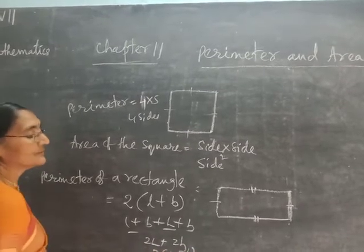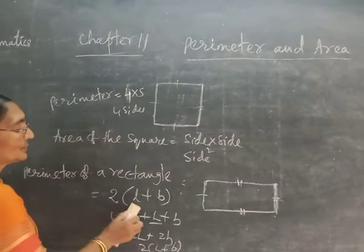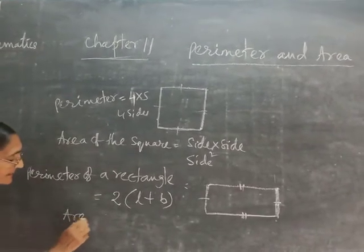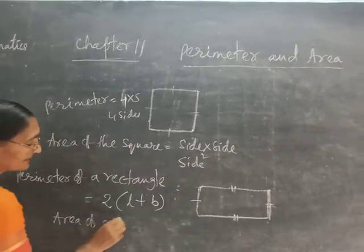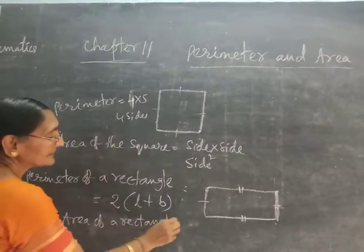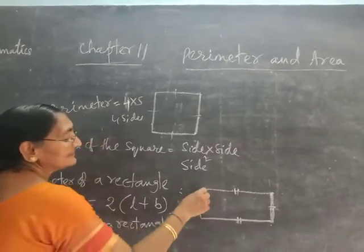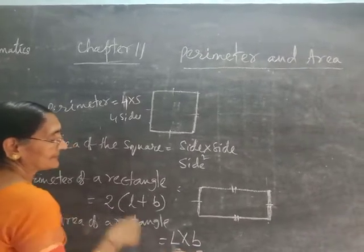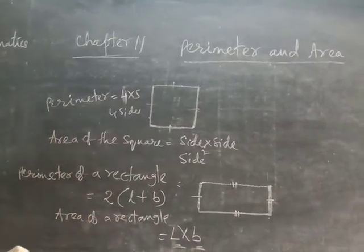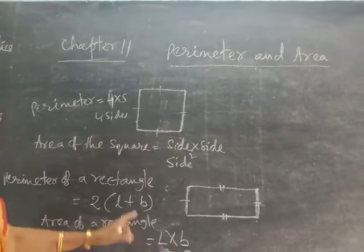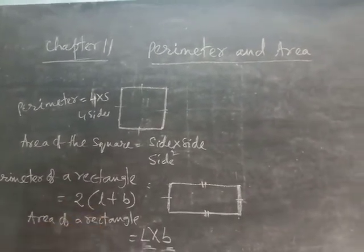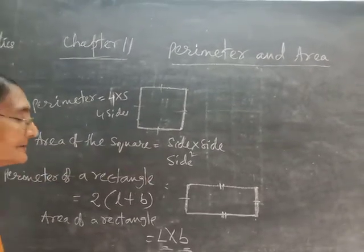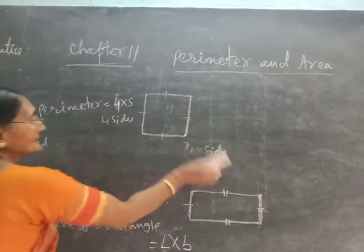The perimeter of the rectangle is 2 × (L + B). What is the area of the rectangle? That is length × breadth — L × B, where L means length and B means breadth. So: perimeter of rectangle = 2 × (L + B); perimeter of square = 4 × side; area of square = side × side. Remember these formulas.